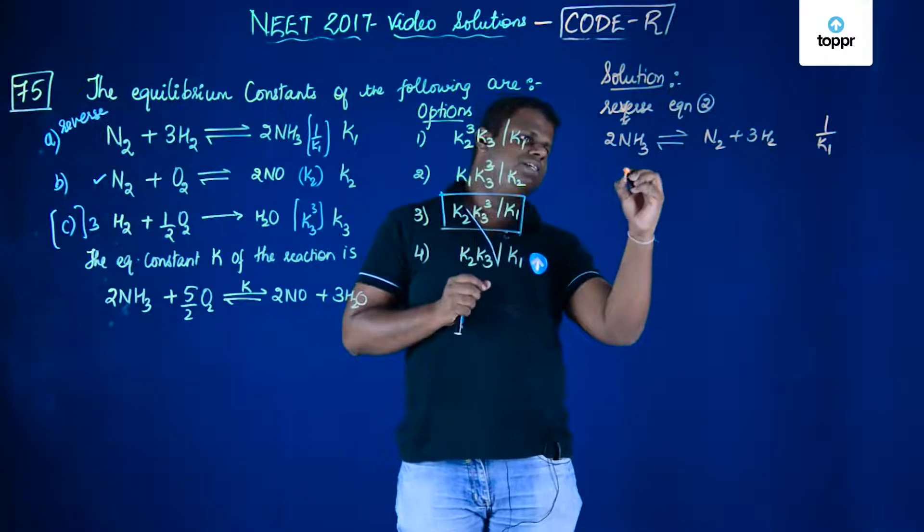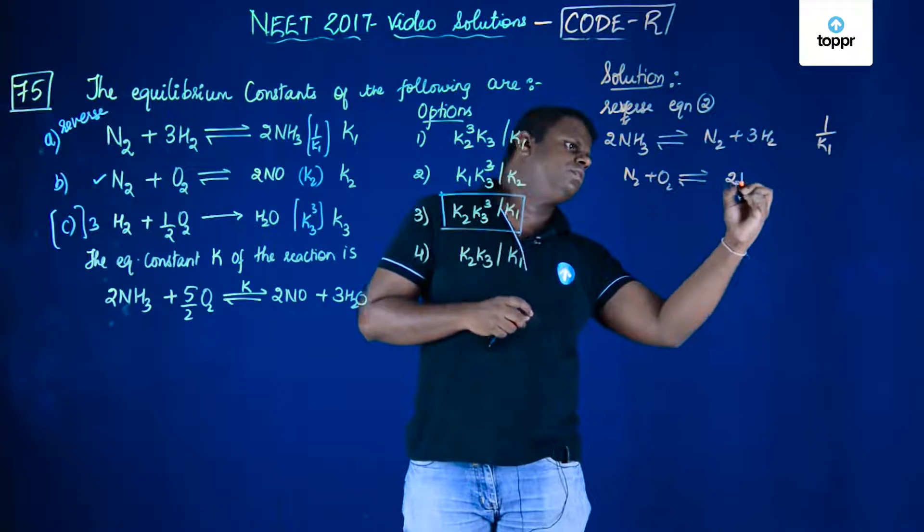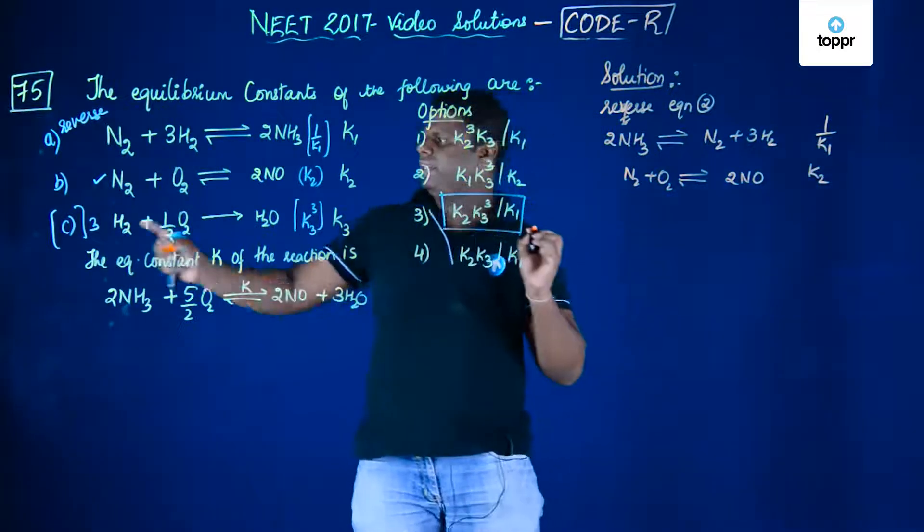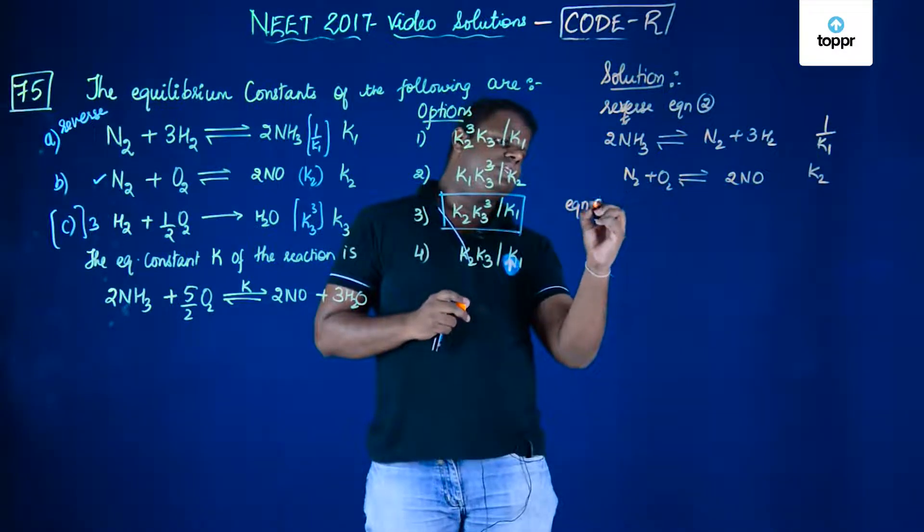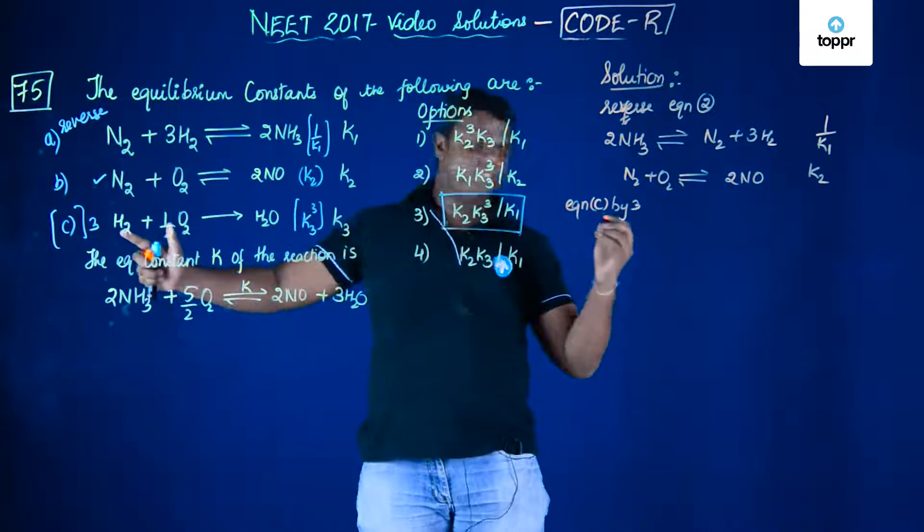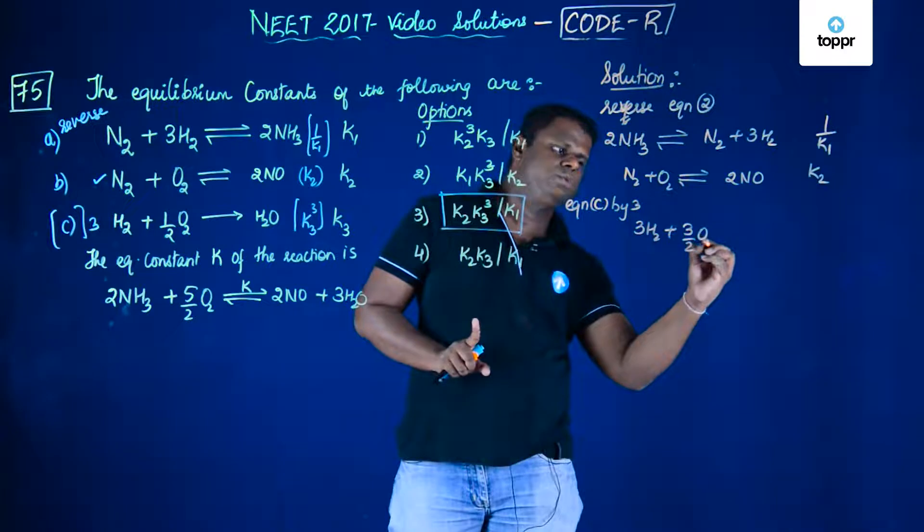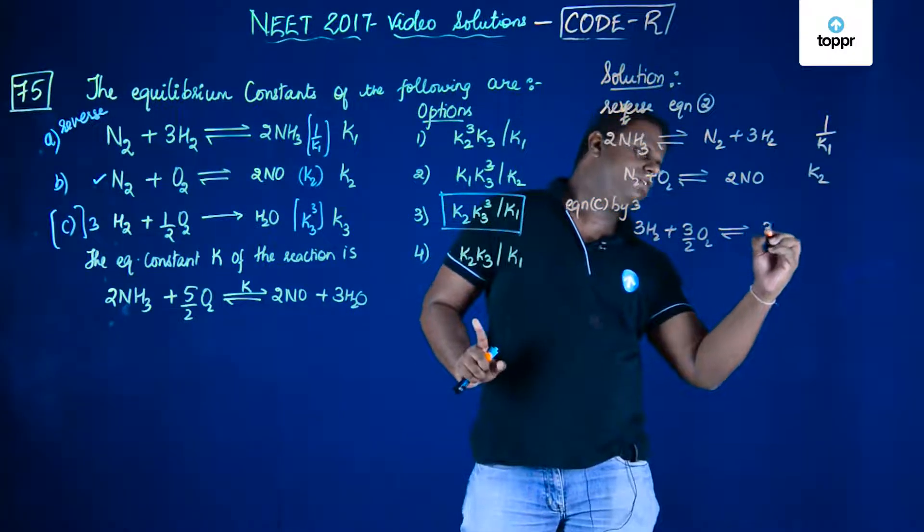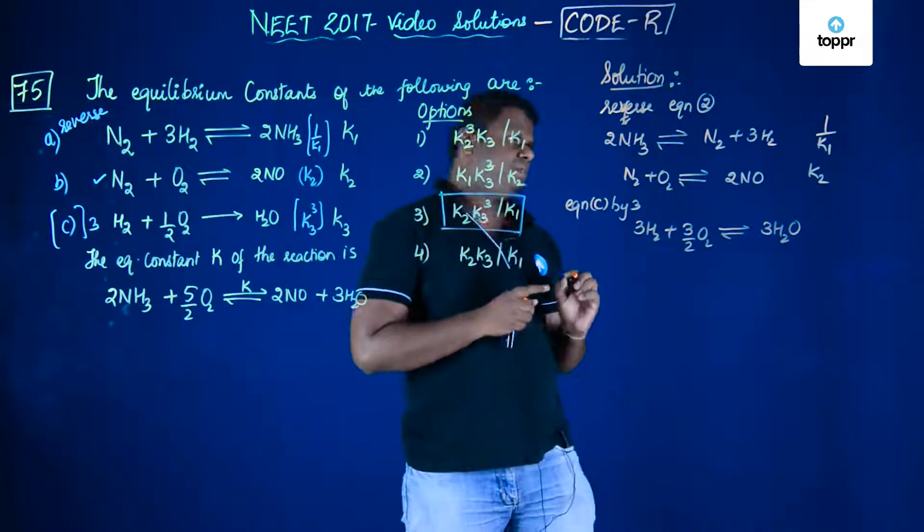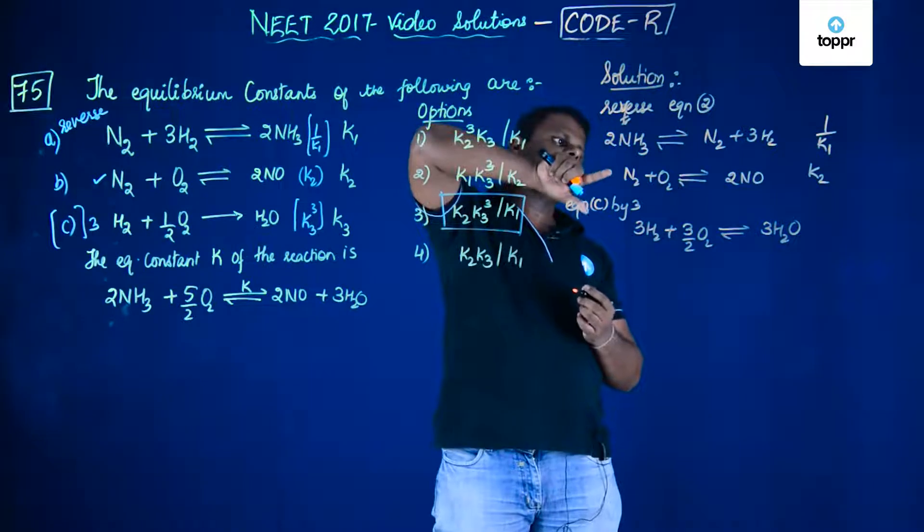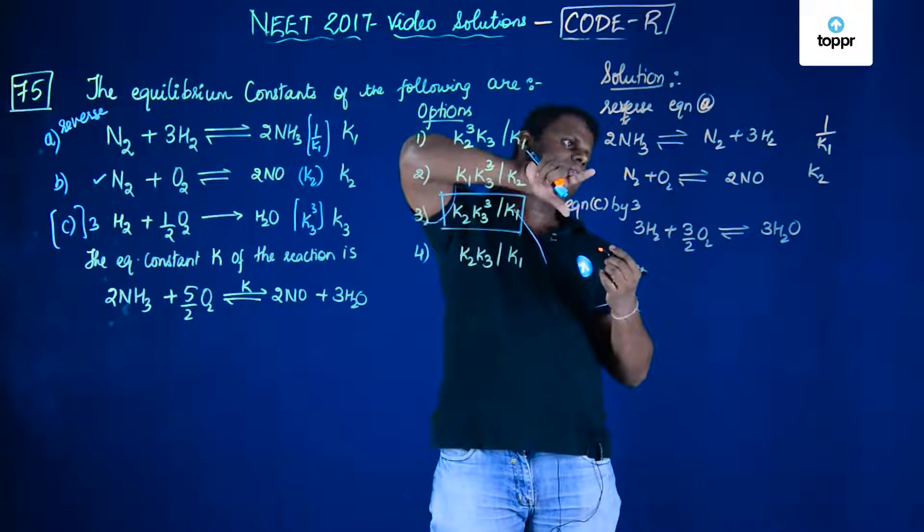Then this is kept as it is. N2 plus O2 in equilibrium with 2NO. In this case, this is going to be k2 itself. Then I am going to multiply equation C by 3. It would become 3H2 plus 3/2 O2 giving me 3H2O. The equilibrium sign is very much necessary. It might have been a misprint in the paper. So you are going to reverse equation A and then keep B as it is.